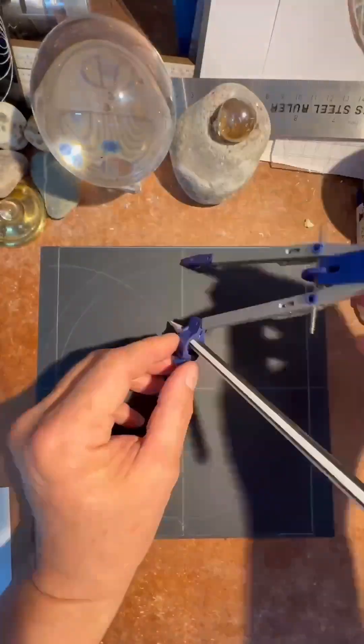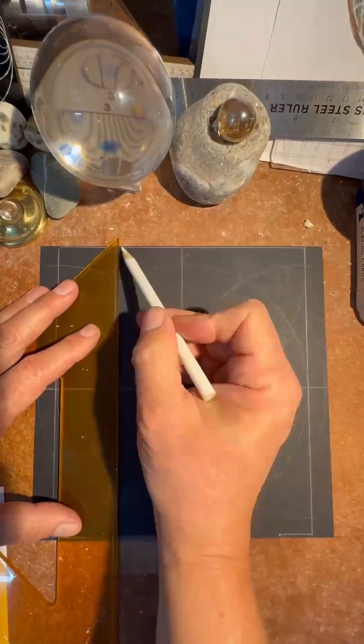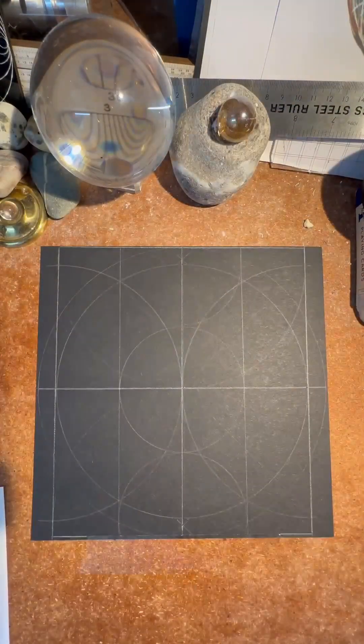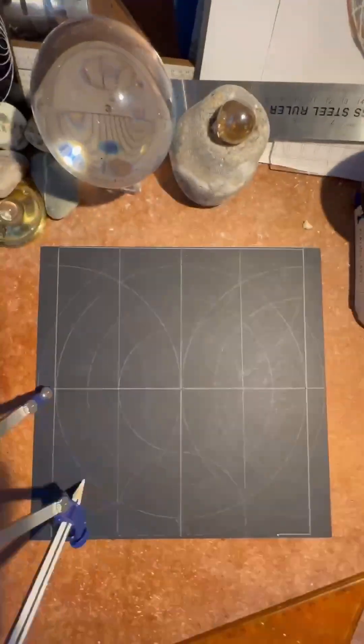Once you have this, use a compass to divide it into equally sectioned pieces so that you have exact quarters.